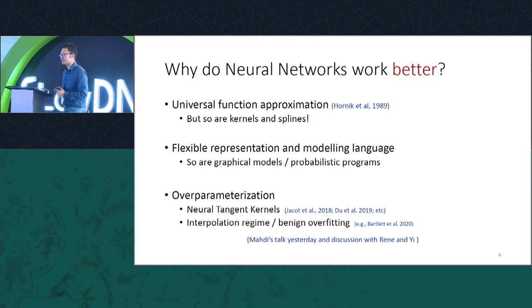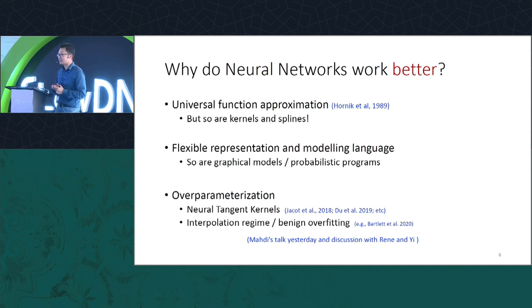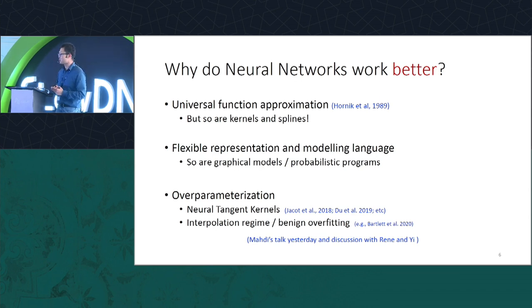More recently there's a very interesting line of work explaining over-parametrization — say, neural tangent kernels and benign overfitting from the previous two talks. But a lot of these things are not specific to neural networks. You see the same behavior in linear models when you over-parametrize them, and arguably they are also not directly separating DNNs from classical models.